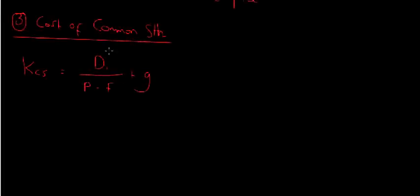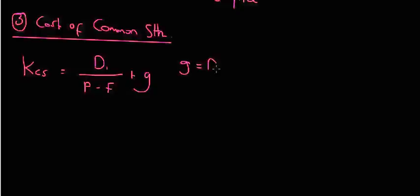Cost of common stock. The cost of common stock is very similar to the cost of preferred stock. KCS equals cost of common stock. Except the only difference is that there is some type of G. Because common stock, a lot of the time they will grow the dividend, the company will grow the dividend. So again, we have D1 over P minus F, but this time we have plus G.